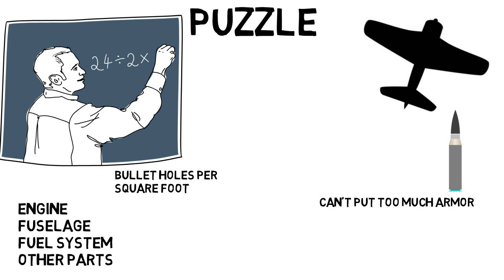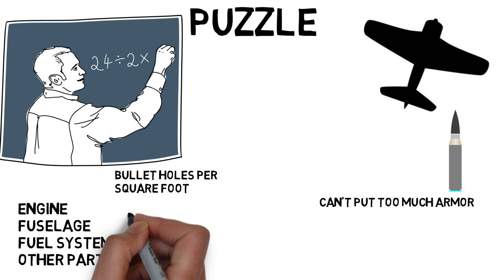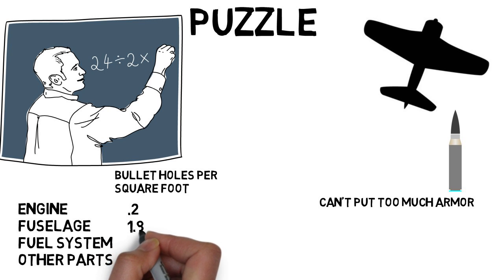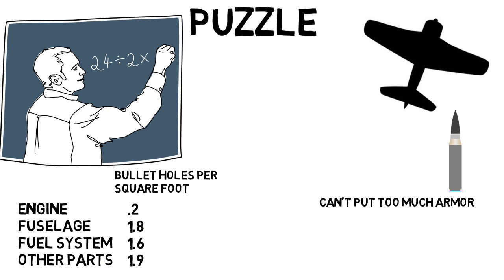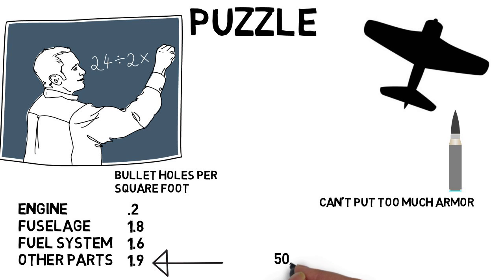You find the engine only has 0.2 bullet holes per square foot, the fuselage has 1.8, the fuel system has 1.6, and the other parts of the plane have 1.9. The engine is very low, but looking at these high numbers, should you shield the other parts of the plane, or focus on the fuselage because of the still high density? Maybe split it 50-50?